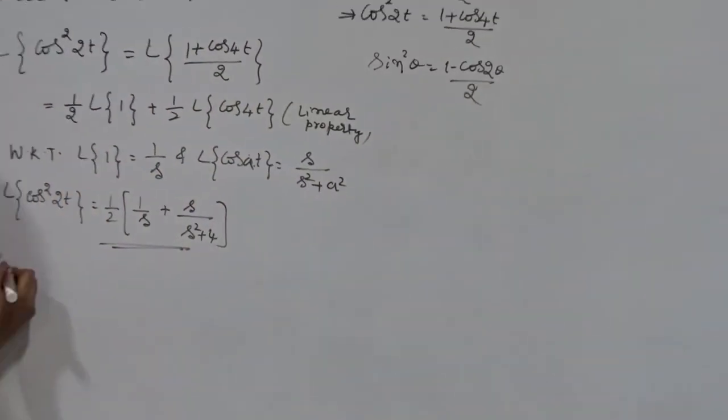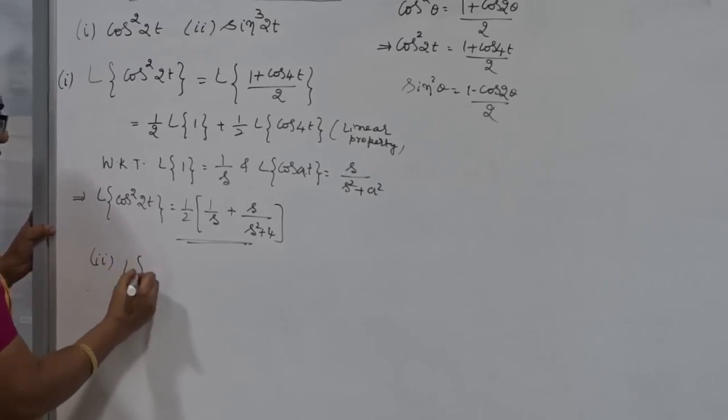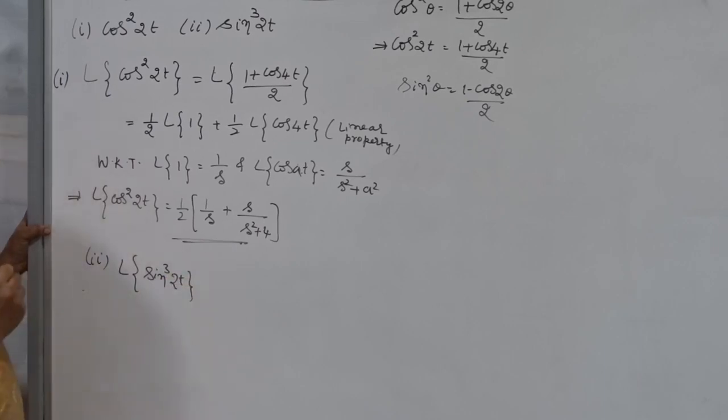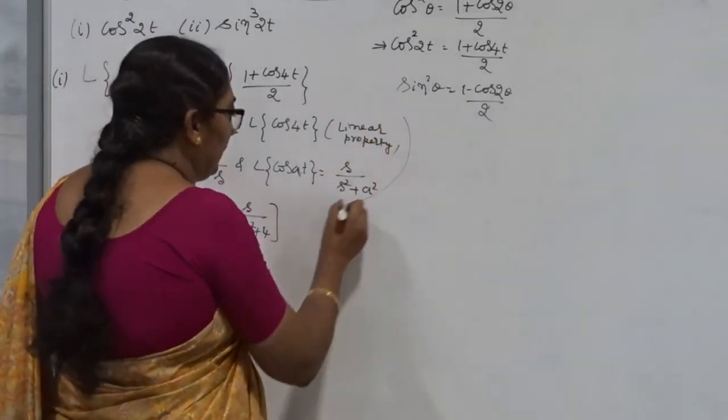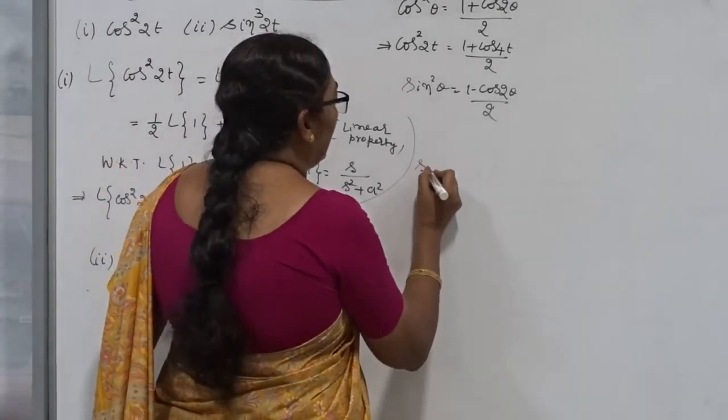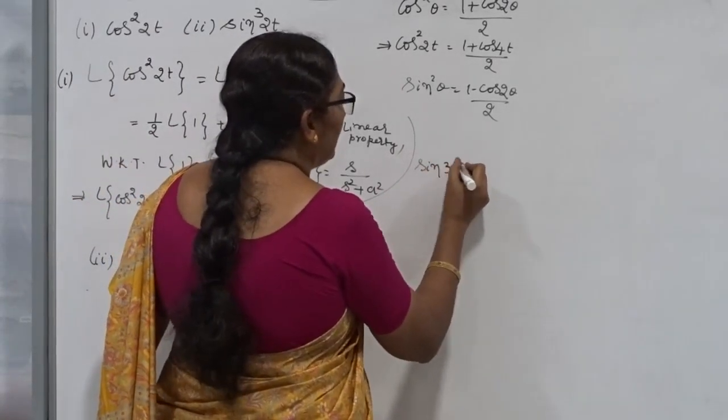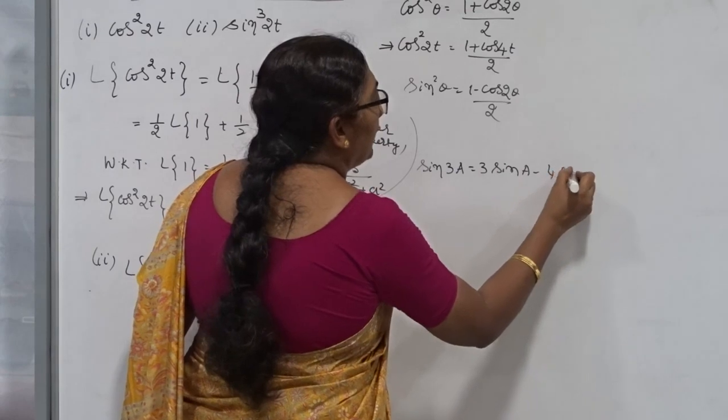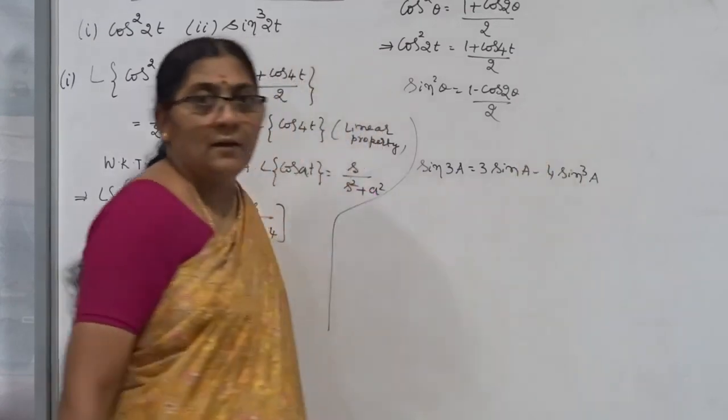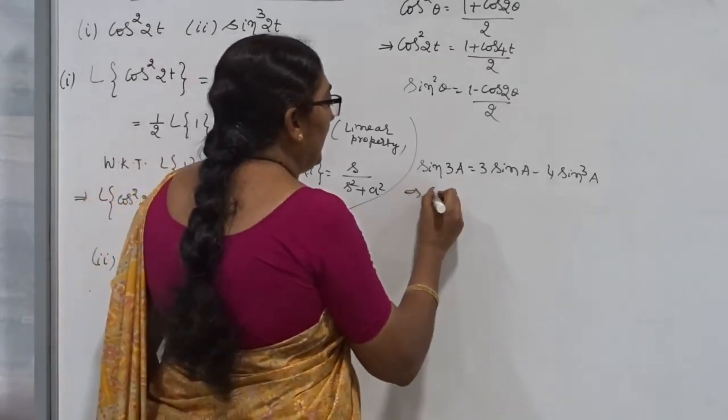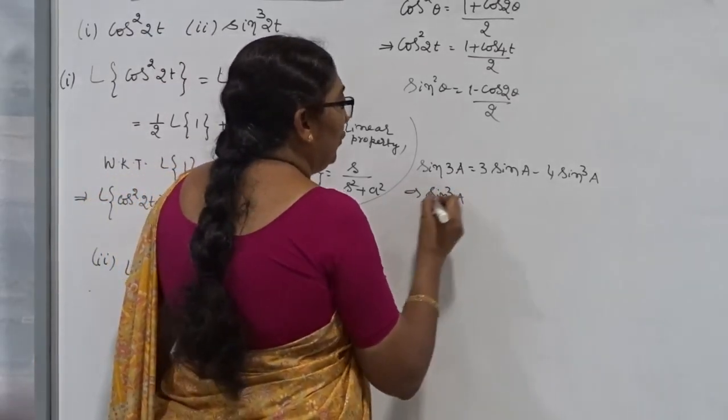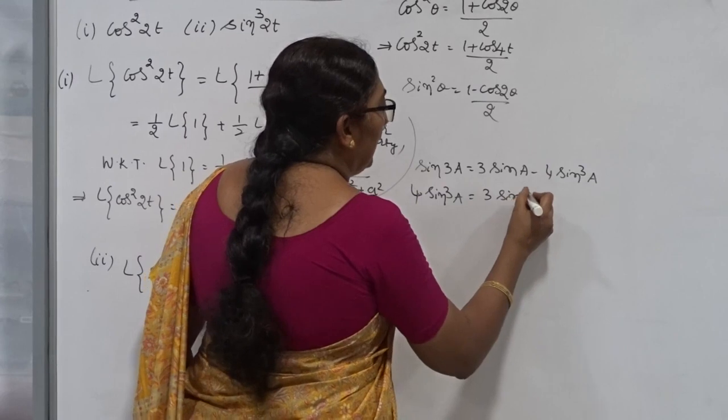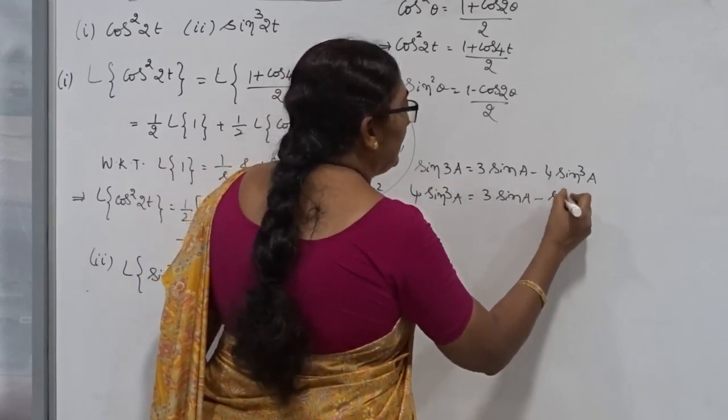The next second one is sine cube. I want to find out Laplace Transform of sine³2t. Now, you don't have a formula for cube function. Now, I am going to use the formula for sine 3a. What is sine 3a? 3 sine a minus 4 sine³a. You already know that this formula. From this, what is sine³a here? How do we get sine³a? You take 4 sine³a to the left-hand side, and then 3 sine a. I should have this left-hand side term in the right-hand side. What is it? Sine 3a.